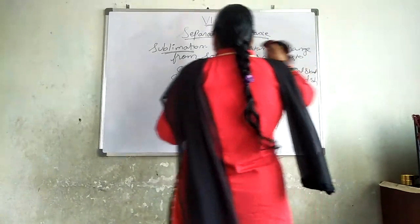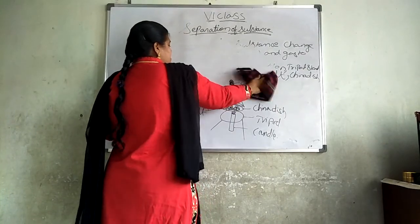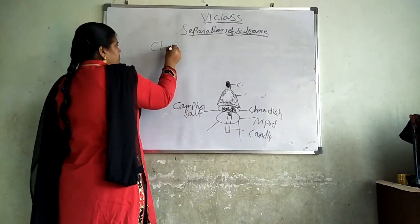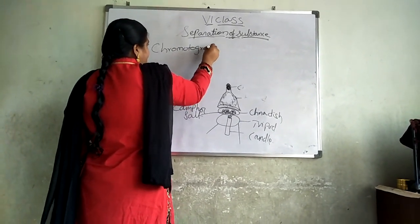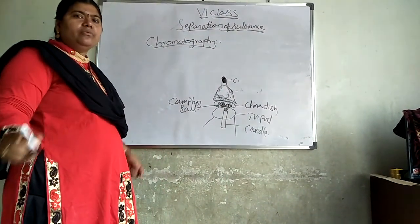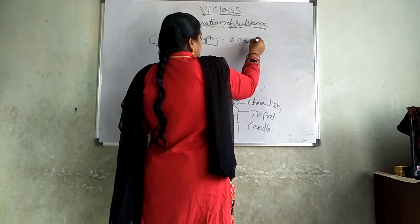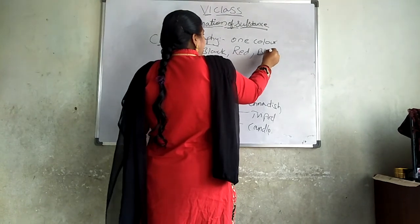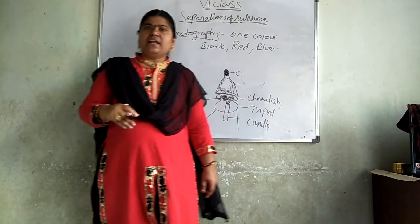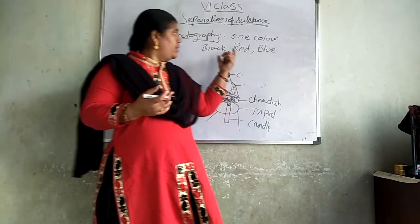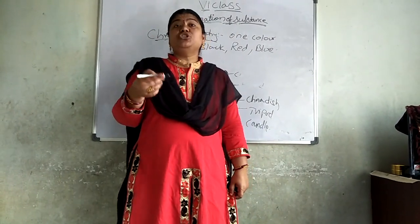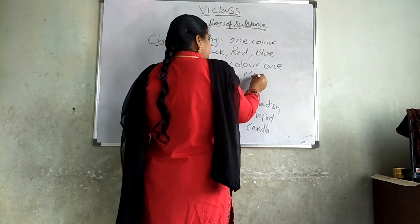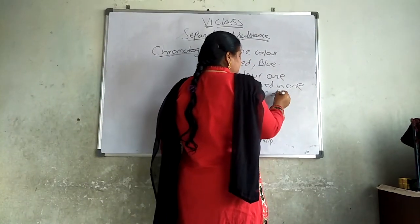Next one is about chromatography. Here, we will have only one color. If I take any ink — it may be black, red, blue — I will show you the bottle and ask what color it is. You will say blue, or red, or black. But this particular color is actually a mixture of many colors. Many colors are mixed into one color. This is what we study in chromatography.